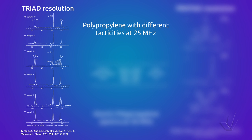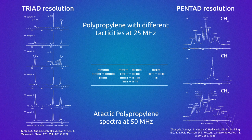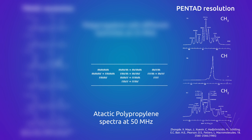Even though in example 3 some superior stereosequences higher than 3 can be seen, the resolution of all these spectra is at the triad level. In the next figure, three spectra of polypropylene taken at 50 MHz — that is, in a 200 MHz equipment — are shown. The resolution is much better, and in the case of the methyl carbon in the upper spectrum, the three triad peaks are further split giving a pentad resolution.